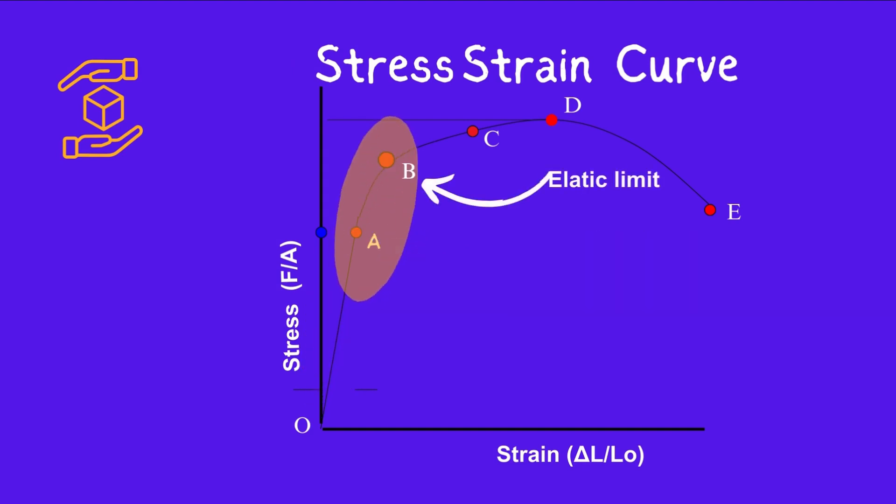Two: Elastic limit. It is the point in the graph up to which the material returns to its original position when the load acting on it is completely removed. Beyond this limit, the material doesn't return to its original position, and plastic deformation starts to appear in it.